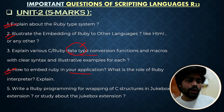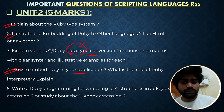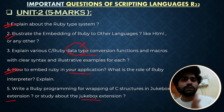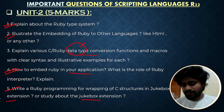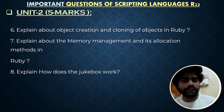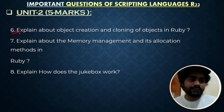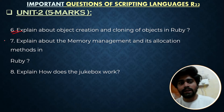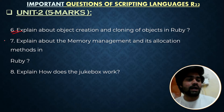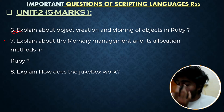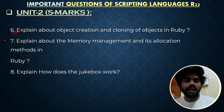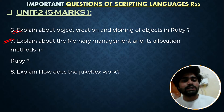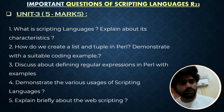Write a Ruby program for wrapping C structures in JukeBox extension — study about the JukeBox extension. It looks like a most-repeated question, so try to focus on it. Explain about object creation and cloning of objects in Ruby. Explain about memory management and its allocation methods in Ruby — that means how to assign memory for a variable, array, or hash. Also, explain how the JukeBox works.